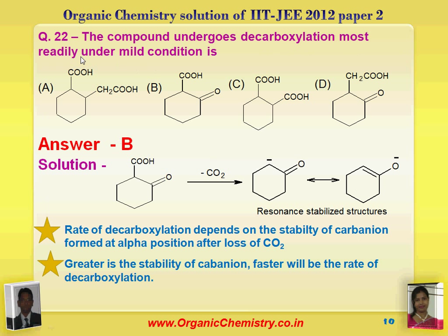Now question number 22 of paper two: the compound that undergoes decarboxylation most readily under mild conditions. The basic concept is the stability of the carbanion at the alpha position — the rate of decarboxylation depends on the stability of the carbanion formed after loss of CO2. Greater stability means faster decarboxylation. In option B, when CO2 is lost, the negative charge is formed over that position and due to the minus-M nature of the carbonyl group, this negative charge is stabilized by resonance. So decarboxylation easily occurs in B.